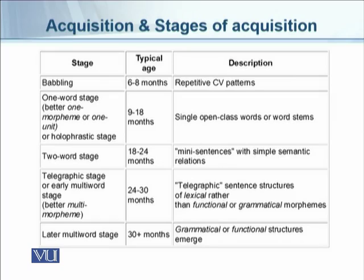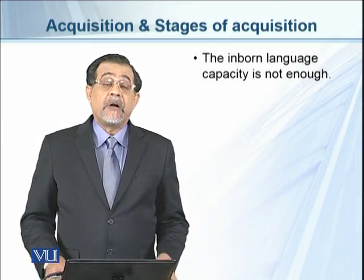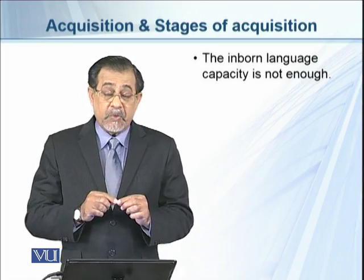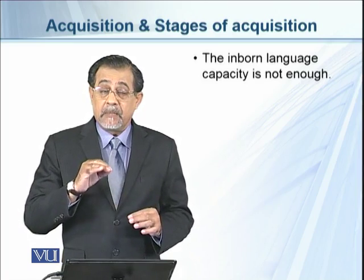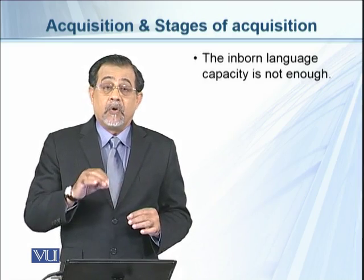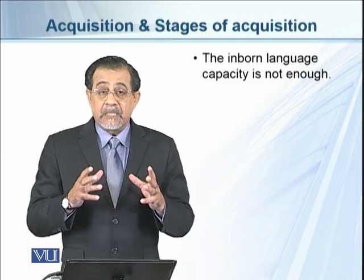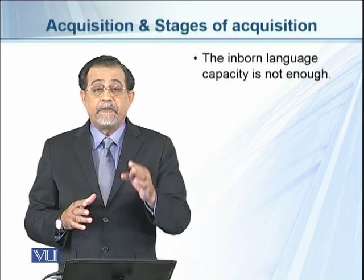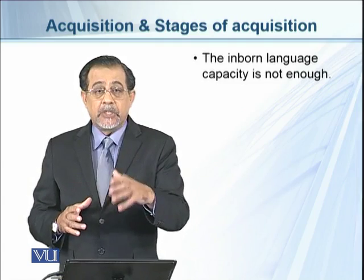After 30 months comes the later multi-word stage, where grammatical and functional structures emerge. The child is now able to use both grammatical and lexical structures and is ready to use language as any older person would. However, inborn language capacity alone is not enough — the innate disposition or hardwired ability is necessary but insufficient on its own.